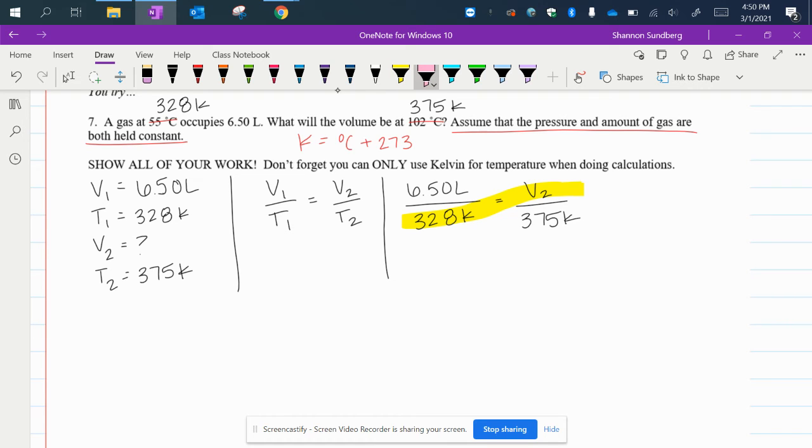You're going to cross multiply those yellow numbers and cross multiply these pink numbers. I like my variable to end up on the left. So I'm going to put my yellow numbers on the left side of the equal sign, and my pink numbers on the right side of the equal sign.